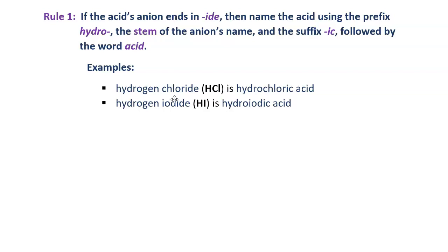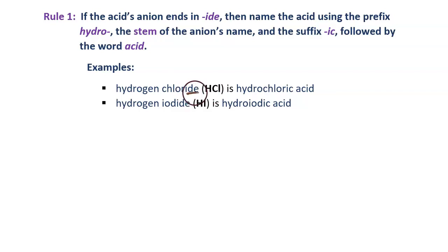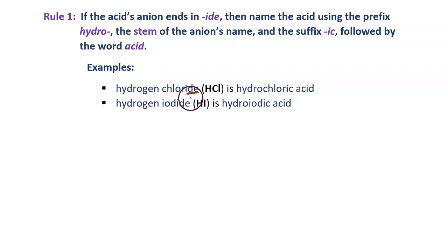Here are some examples. Hydrogen chloride has the formula HCl. When hydrogen chloride is dissolved in water, we name it using the acid rules. Because the anion ends in "-ide", rule number one applies: start the name with hydro, take the stem from the word chloride, which is "chlor", and end it with "-ic". It's hydrochloric acid.